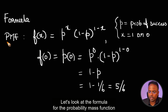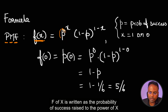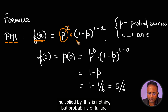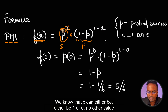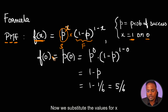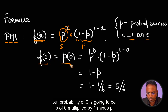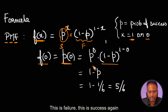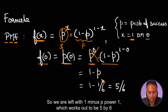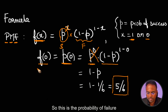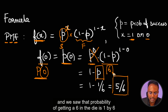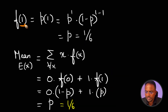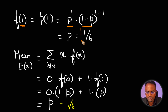The formula for the probability mass function is: F(x) = P^x × (1 − P)^(1 − x), where P is probability of success and (1 − P) is probability of failure, and x can either be 1 or 0. Substituting x = 0: F(0) = P^0 × (1 − P)^1, which works out to 5/6 — the probability of failure. Substituting x = 1: F(1) = P^1 × (1 − P)^0, which gives 1/6 — the probability of success.